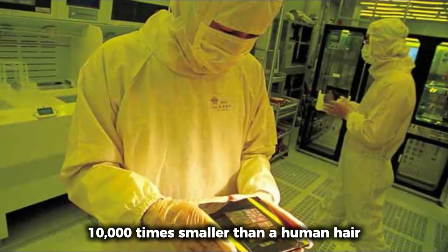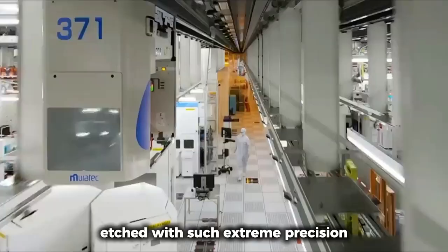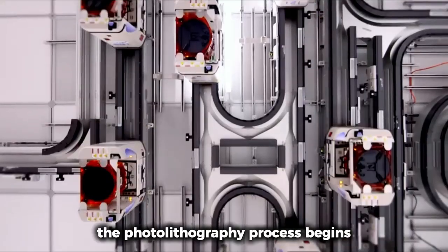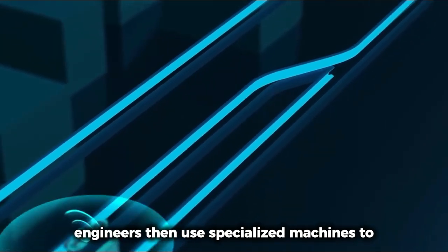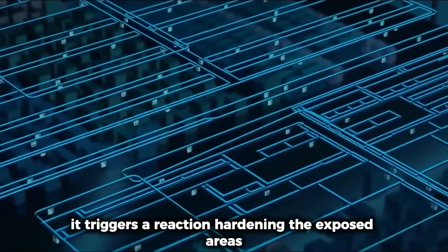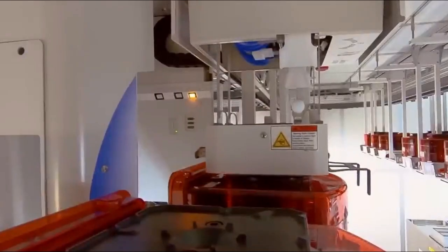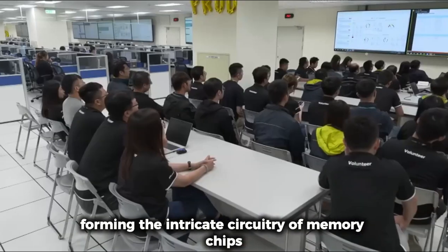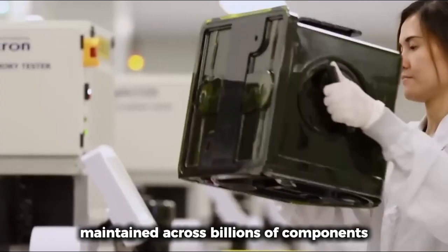But the precision here dwarfs anything in conventional photography. The scale of this engineering challenge is difficult to comprehend. Modern transistors—the fundamental building blocks that function as microscopic switches in computing—are approximately 10,000 times smaller than a human hair. These nanoscale components form pathways just a few nanometers wide, etched with such extreme precision that even the slightest deviation would render entire sections of the chip useless. The photolithography process begins with coating the silicon wafer with a light-sensitive chemical layer. Engineers then use specialized machines to project UV light through masks containing the circuit pattern. When this light hits the chemical coating, it triggers a reaction, hardening the exposed areas while leaving unexposed sections vulnerable to removal in subsequent steps. Through careful etching and layering, complex three-dimensional structures emerge, forming the intricate circuitry of memory chips.